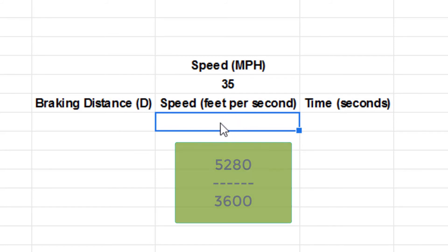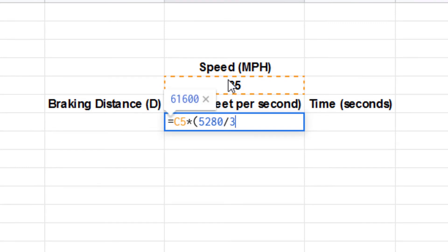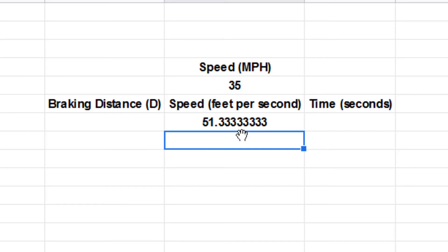So in order to do that in sheets, it's actually pretty rad. Click in the cell, type equals, hit the number up here, and then hit times 5,280 divided by 3,600. And then press enter. And you'll notice that is exactly the number you got previously in the lab for the number of feet per second a car is traveling when it's going 35 miles an hour.